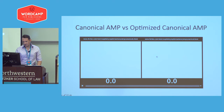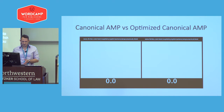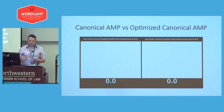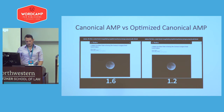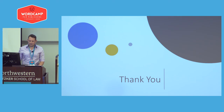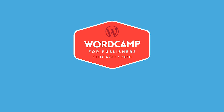Here you can see a canonical AMP page — non-optimized versus optimized. The only difference is two meta tags: one to preload the hero image and one to preload the critical AMP libraries. The optimized one loaded much, much faster. Thank you.